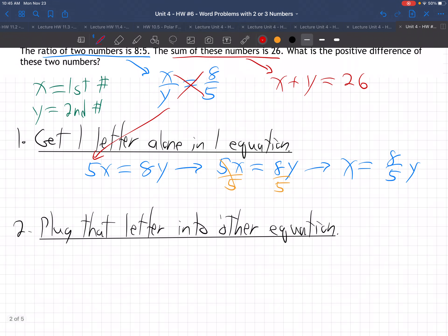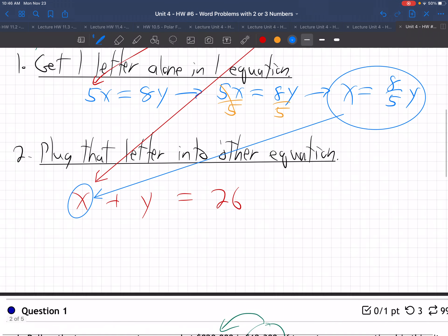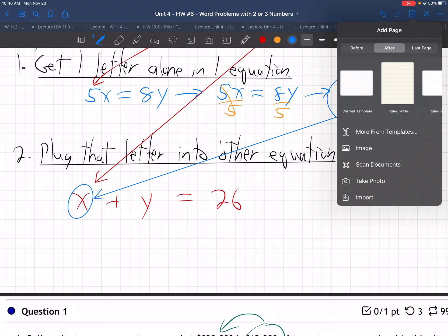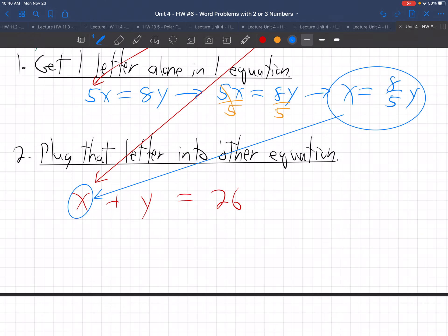Then we grab the other equation. Bring it down here. We plug this right here in for x right there. What do we get when we do that? We get x, which is 8 fifths y, plus y is 26, because x is 8 fifths y.